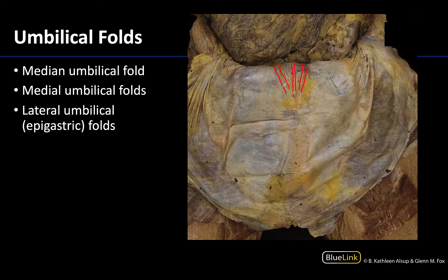There are some portions of the umbilical arteries that are patent, or open, in an adult, but the portions outlined here are closed — closed to being involved in blood flow — and that is why this is considered a developmental ligament.